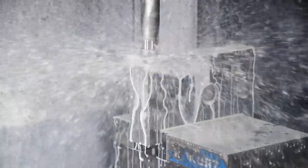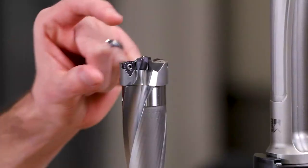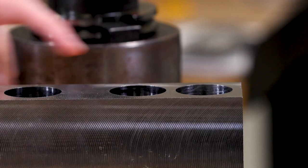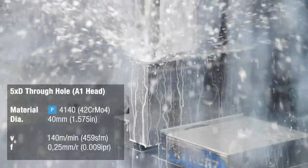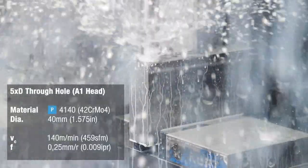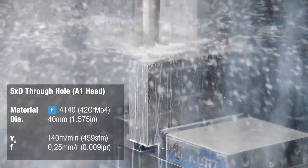First we're going to apply the KSEM Plus drill with an A1 drill head and drill a 5xD through hole. The A1 drill heads are for high performance, high productivity straight hole entry and straight hole exits.